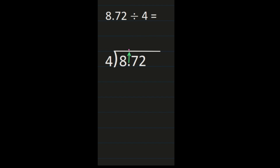Now those steps are to divide, multiply, subtract, and bring down. So first we're going to divide 8 by 4. 8 divided by 4 is 2. Then we multiply — 2 times 4 is 8. Next we subtract — 8 minus 8 is 0. And then I'm going to go to the next digit and bring that 7 straight down.